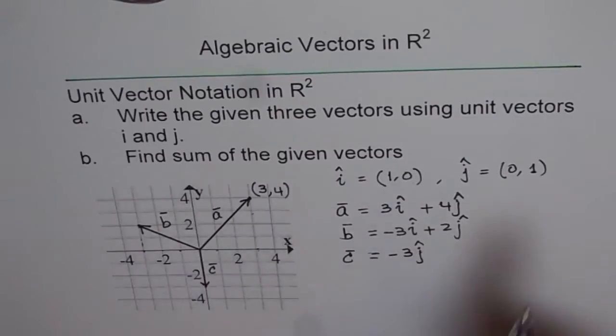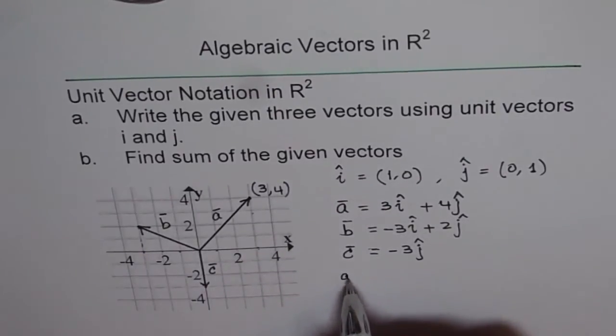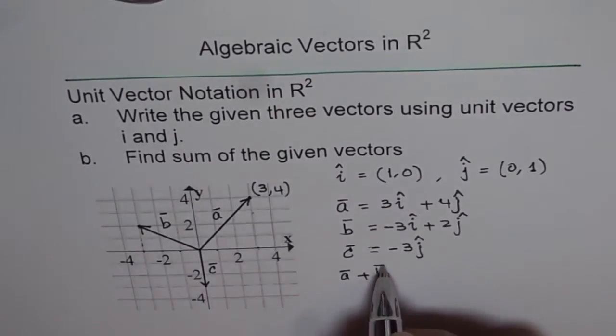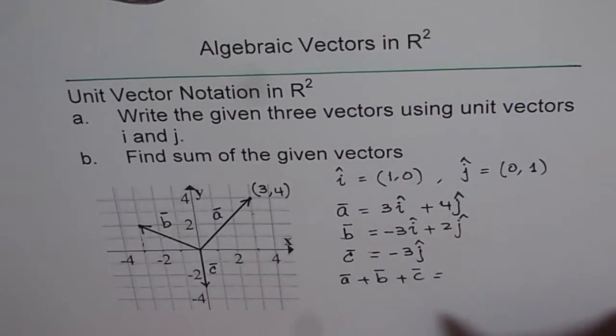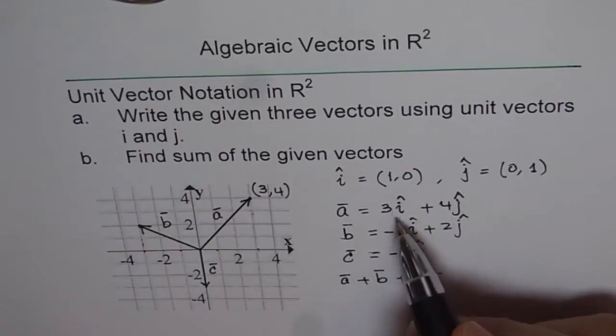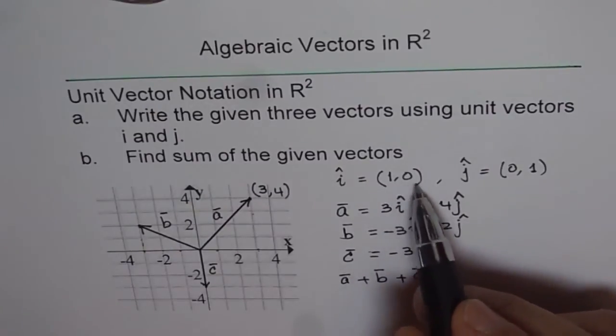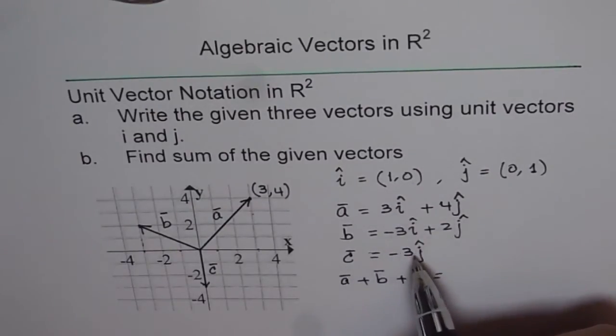Now let's do sum of these vectors. So what we are trying to do now is A plus B plus C. Now when you do A plus B plus C, then basically you can combine their components. So these are the components. This is x component. That is y component. So let's add them up.